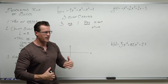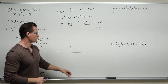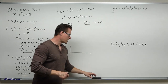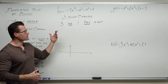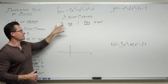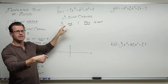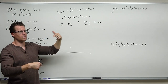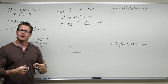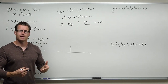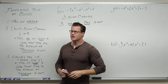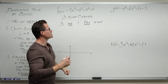I might mention that one more time as we go through. So, run down one more time: put it in order, count the sign changes — you're going to have that many, or two less than that, and you write the whole list. So three or one positive x-intercepts.